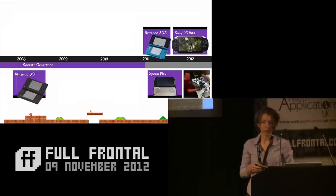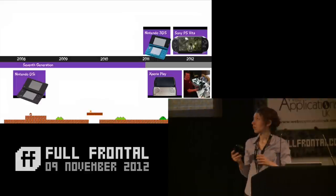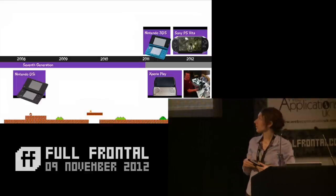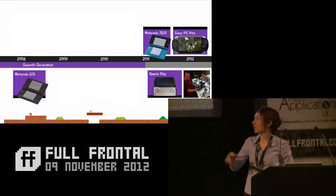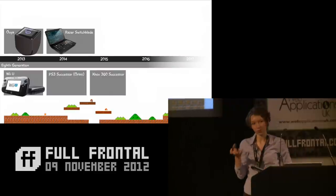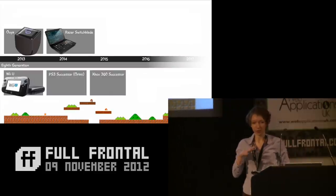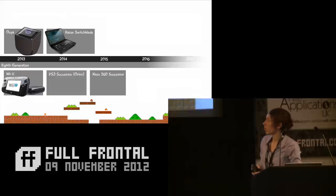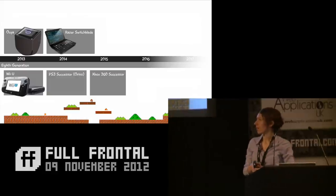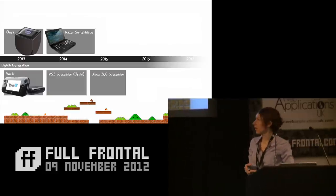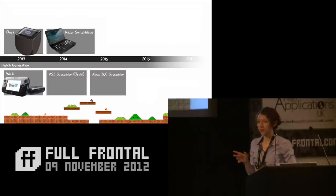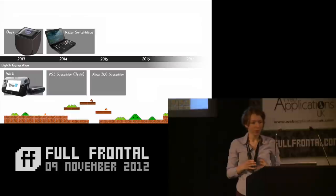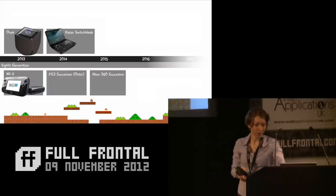The OUYA is built on Android. The Razer Switchblade has keys whose icons change depending on what game you're playing. The PS3 successor is codenamed Orbis. There'll be a successor to the Xbox 360 in a year or so, rumoured to have built-in Kinect and always-on internet.